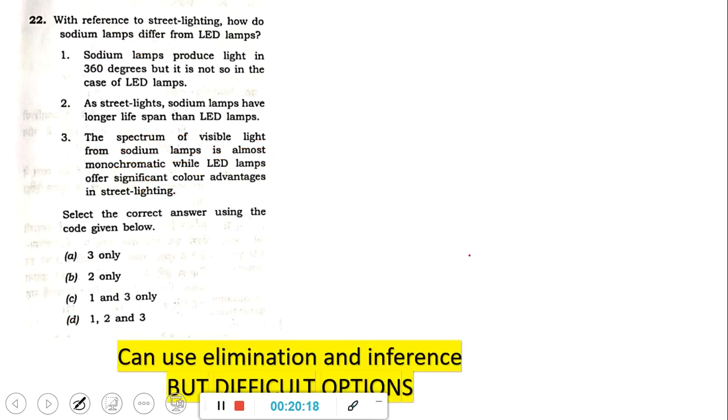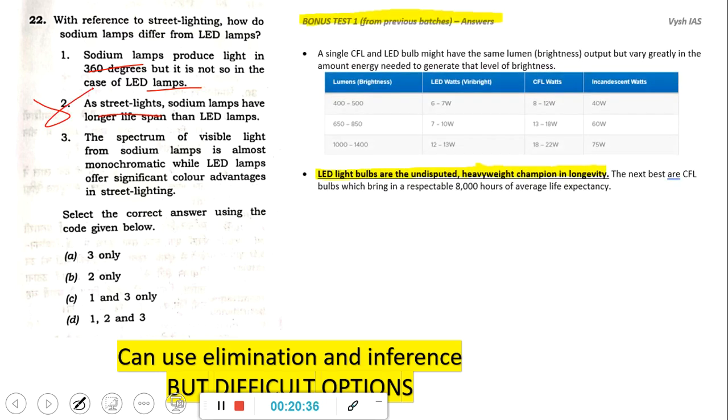Now sodium lamp and LED lamp. Again options were difficult because of which you could not solve. Sodium lamp produce light in 360 degree but LED lamp cannot - you know it or you don't know it. Then as street lights the sodium lamp have longer lifespan - this is something you should have known that it is wrong. Because LED, in a normal current affair also it was there because of the Ujala scheme. Where LED is given to everyone. In that there was a comparison chart where the LED, the CFL, the old tube and the incandescent yellow color bulb - these things were compared. And then told like LED is the undisputed heavyweight championship in longevity. It can have lot of life. So that second statement you should have known. But if you know the second statement also, you can eliminate only two options.